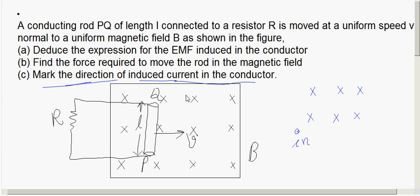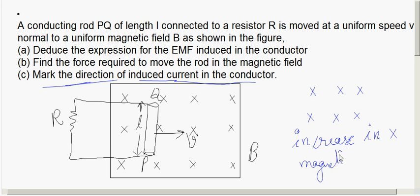The induced EMF must oppose this increase in cross magnetic field. This is possible if the induced current produces a dot magnetic field (out of the page), since cross and dot fields are opposite in direction and cancel each other.